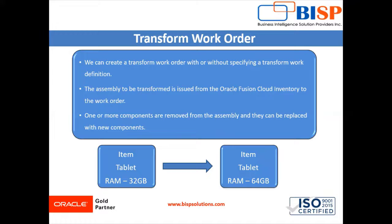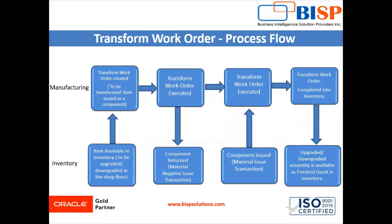One or more components are removed from the assembly and can be replaced with a new component, and the assembly gets transformed into another item. For example, in our inventory organization we have an item called Tablet with 32GB RAM. We are going to remove the 32GB RAM and replace it with 64GB RAM, by which the assembly is upgraded to a higher version. The transform assembly is then completed in inventory as a finish item. You can see on the screen the business flow diagram of the transform work order process — how an assembly in the inventory is transformed into another assembly on the manufacturing shop floor.